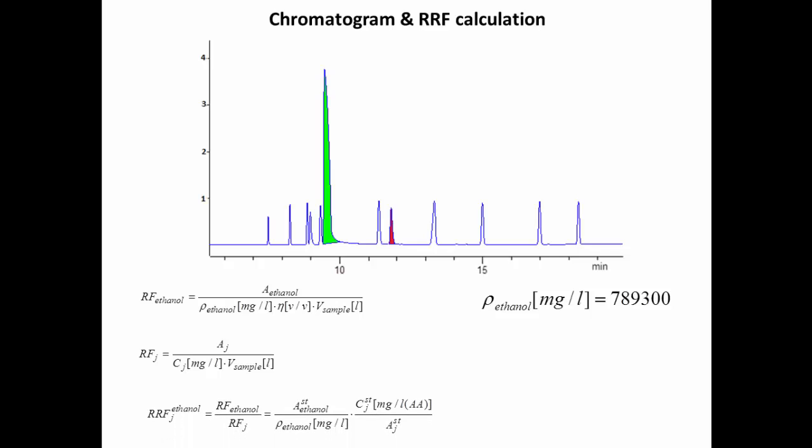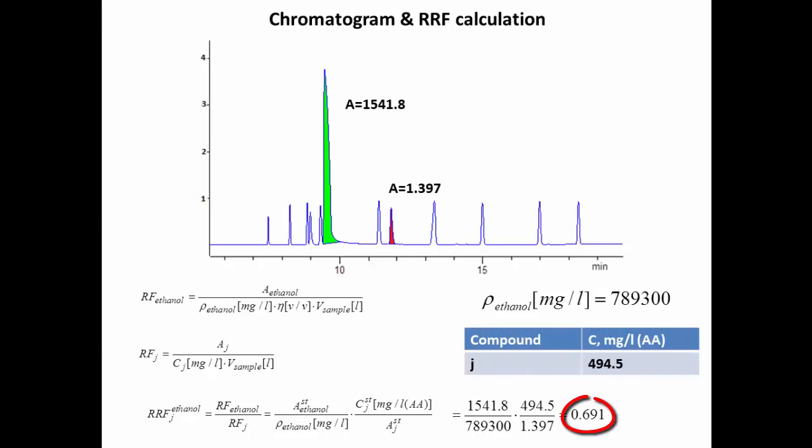The RRF values, in turn, are the relations of Rf values of ethanol and J compound. During the counting process, the eta value will convert J concentration dimension from mg per litre to mg per litre of absolute alcohol. And further you can see the example where RRF value is close to 0.7. It means that the detector is more sensitive to J compound rather than to ethanol. And the RRF value more than 1 has the opposite meaning.